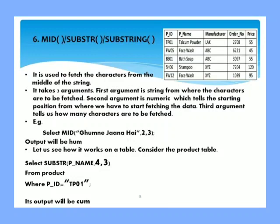The next string function is MID, which is also known as SUBSTR or SUBSTRING. It is used to fetch characters from the middle of the string. It takes three arguments. First argument is the main string from where the data is to be fetched. Second and third arguments are numeric data type. Second argument tells us from where we have to start the fetching, and third argument tells us how many characters are to be fetched. For example, select MID GHUMNE JANA HAI comma 2 comma 3. From which position? Second. So second position starts at H. G is first position, H is second position. How many characters? Three. So start fetching from H: HUM. So the output will be HUM.